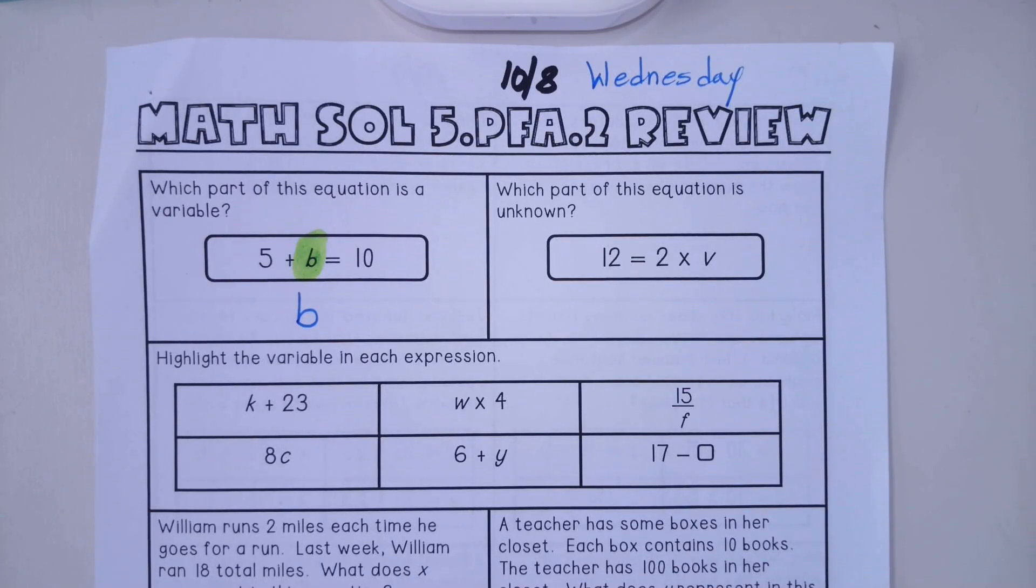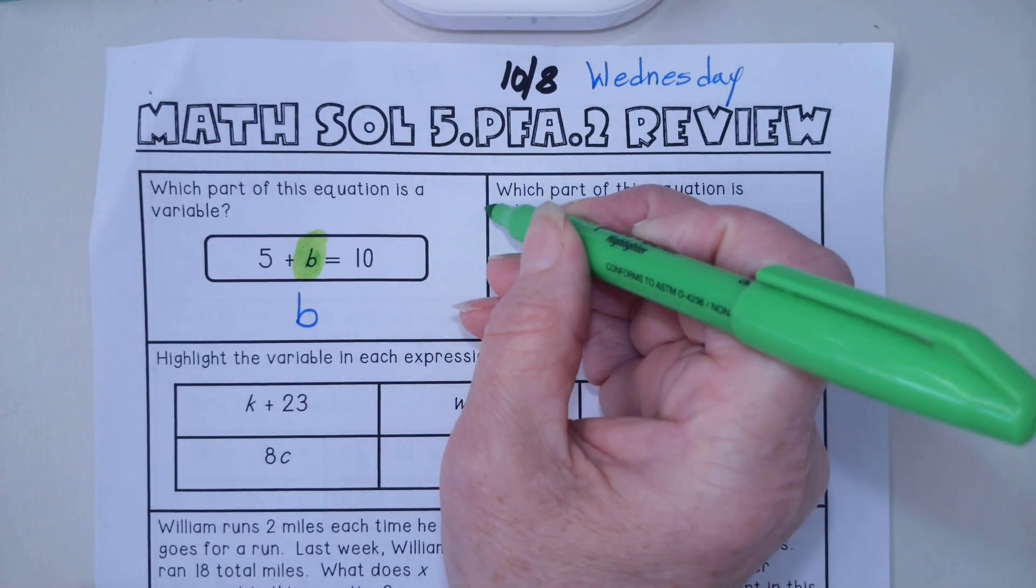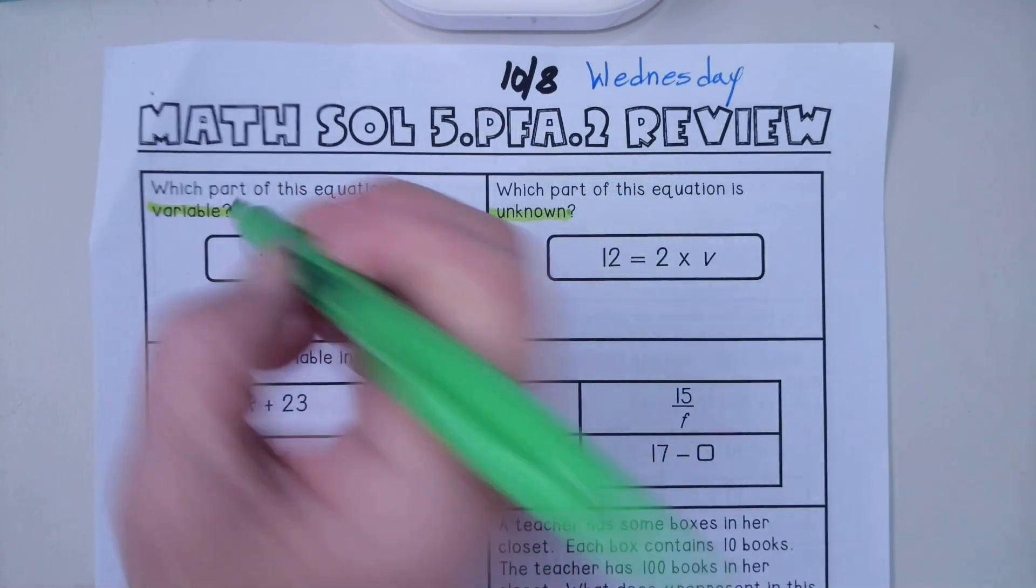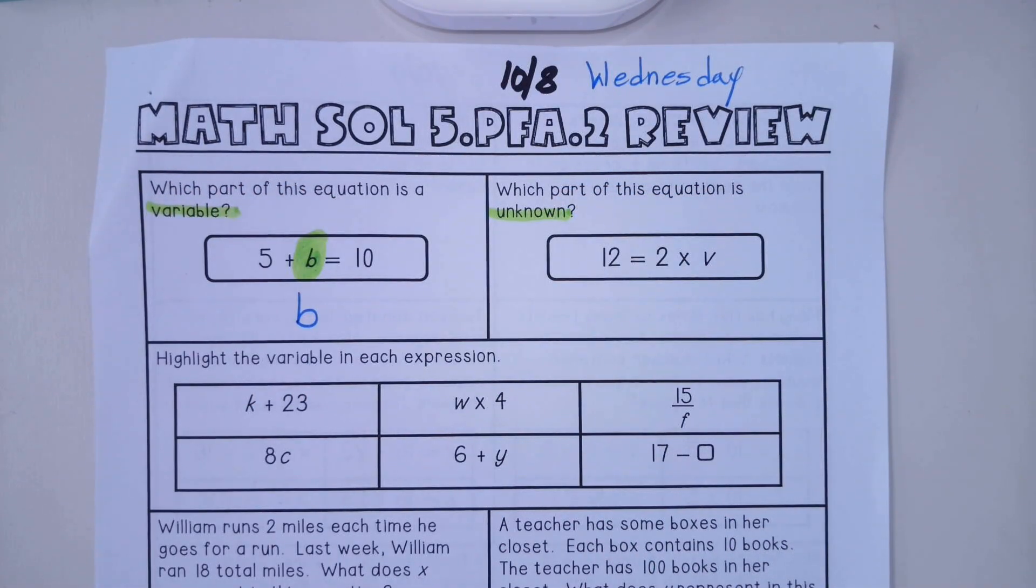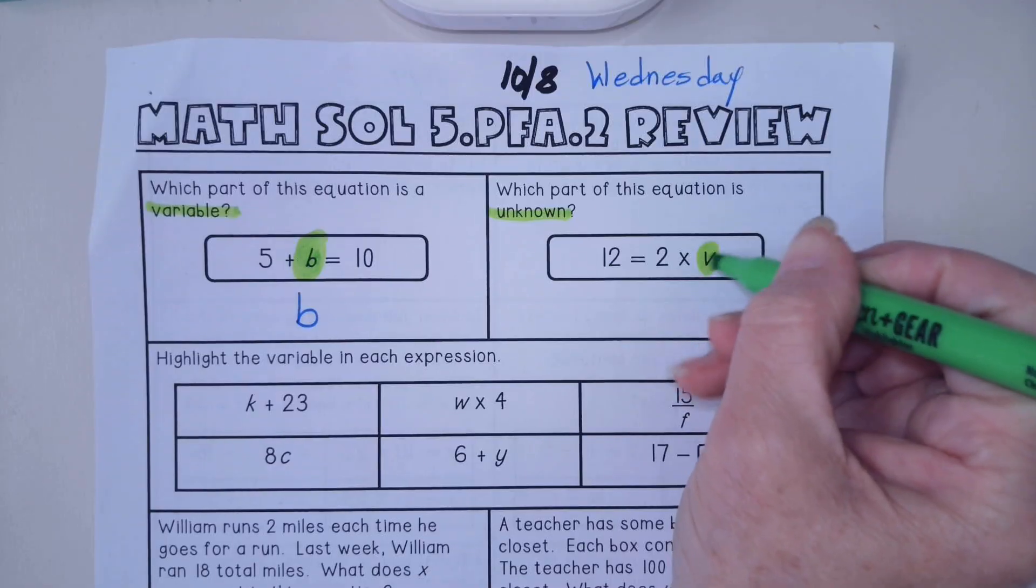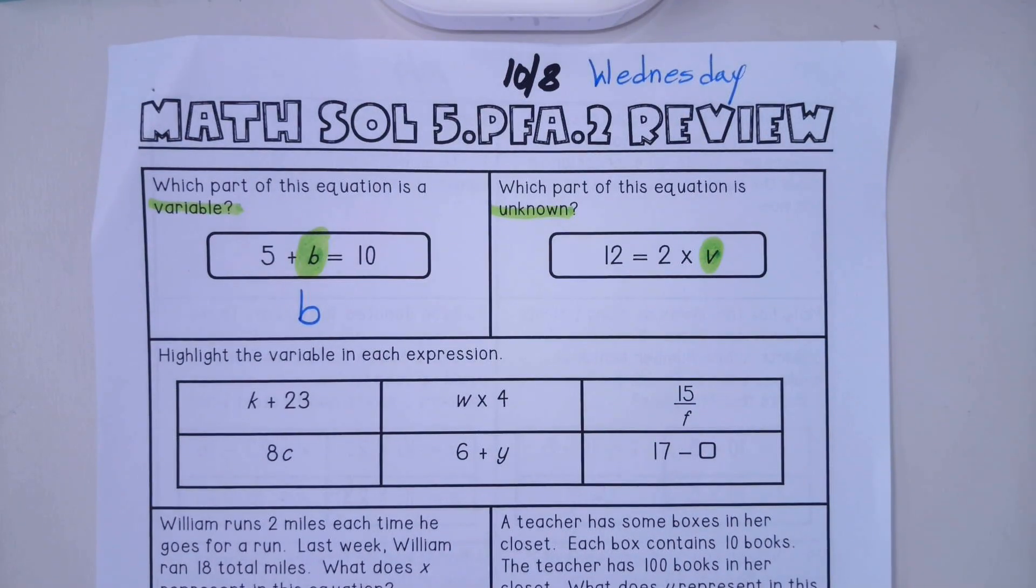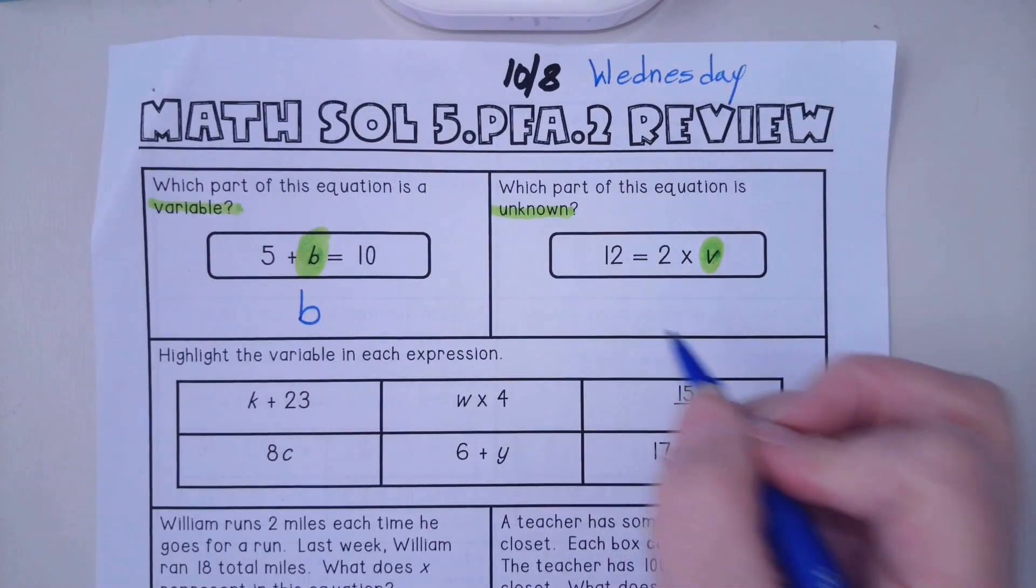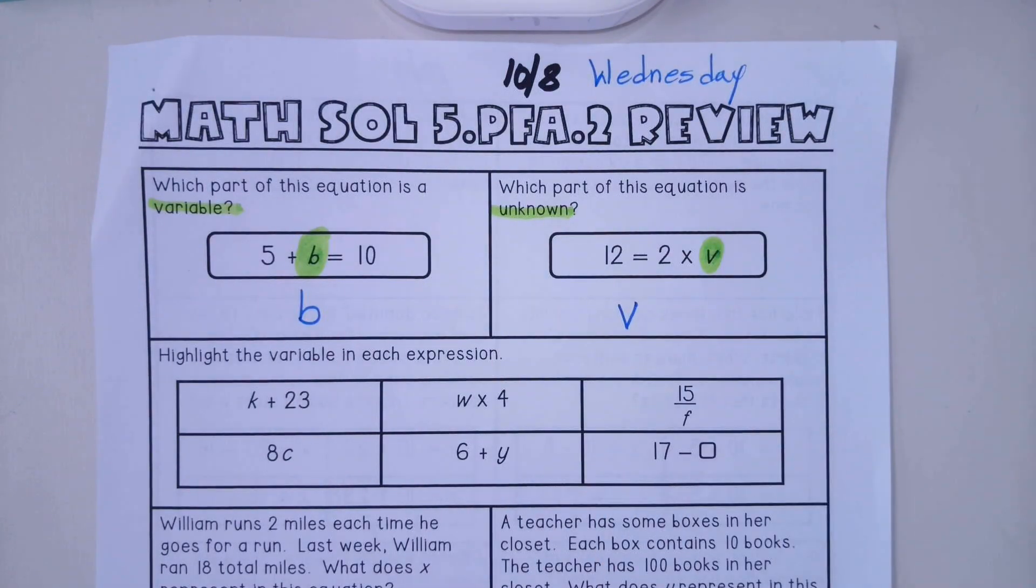In question two it asks which part of this equation is unknown. The word is a little bit different - they're asking for the part that is unknown or the part that's a variable. Those could be interchanged, they could be synonyms for each other. So for the second question it will be the variable v.